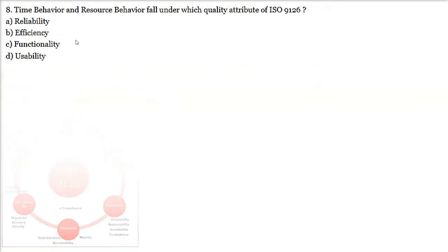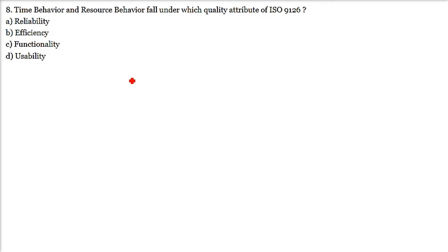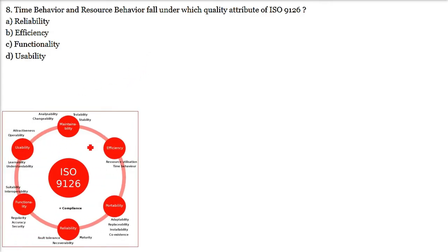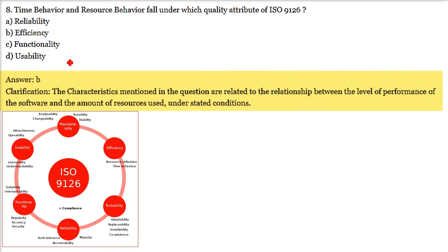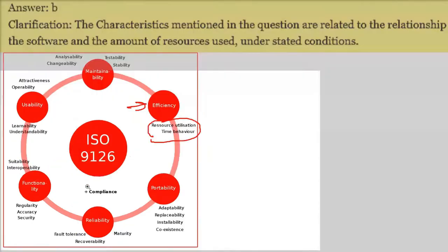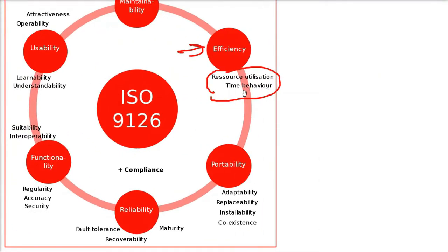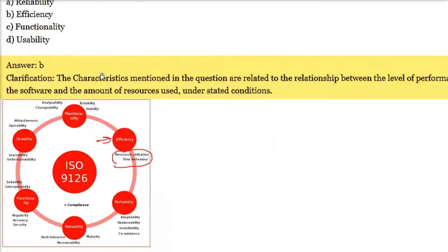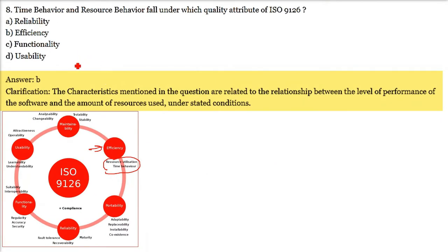Time behavior and resource utilization fall under which quality attribute of ISO 9126? The answer is efficiency. Under the efficiency attribute, we have resource utilization and time behavior as the two sub-quality attributes. So efficiency in ISO 9126 is all about resource utilization and time behavior.